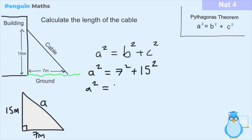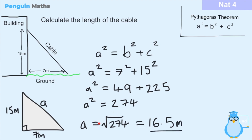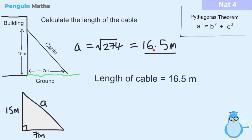So a squared equals 49 (which is 7 squared) plus 225 (which is 15 squared). Adding them together: 49 plus 225 equals 274. Taking the square root of 274 gives approximately 16.5 meters. Since a is 16.5 meters, the length of the cable is also 16.5 meters. That shows how we can use Pythagoras in real world problems to solve them.